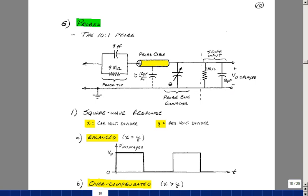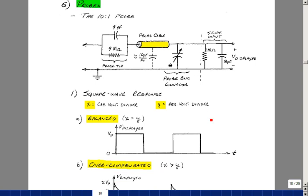In the 303 lab we had looked at calculating a balanced bridge. And so basically we have a resistive voltage divider and a capacitive voltage divider.